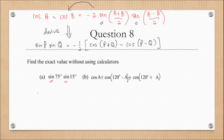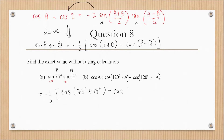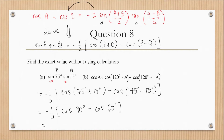Using the new equation for sine 75° · sine 15°, let P = 75 and Q = 15. Substituting into the formula gives negative one-half times [cos(75+15) minus cos(75−15)], which simplifies to negative one-half times [cos 90° minus cos 60°]. The final answer is negative one-quarter.